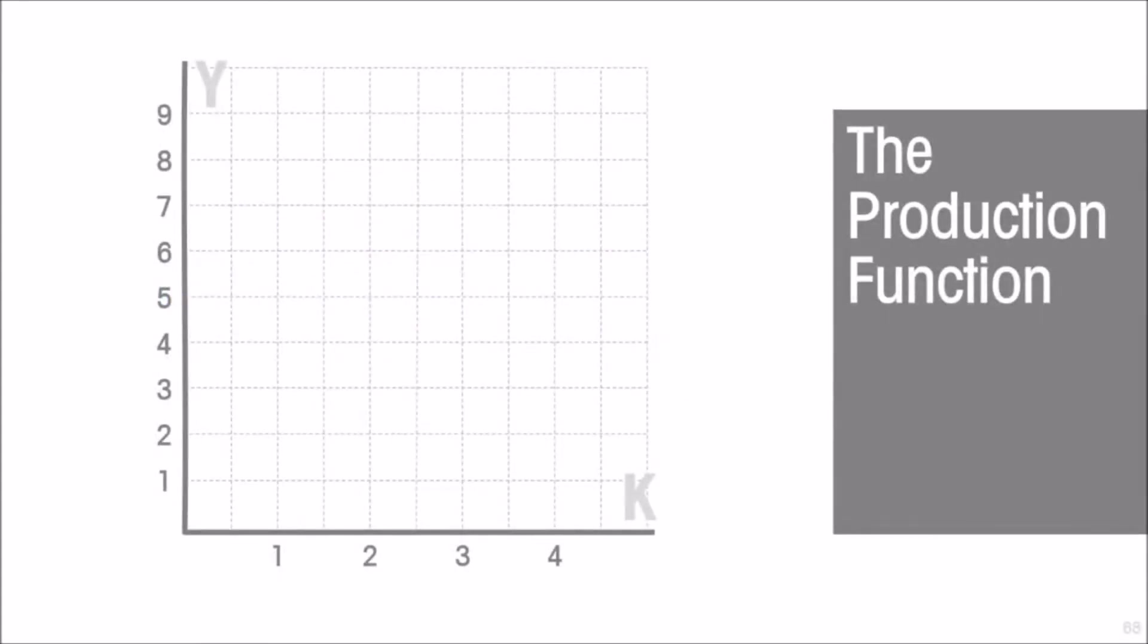Since we are stuck with a two-dimensional graph, then this simplified production function is going to take us given the amount of labor and other factors and simply map changes in the amount of capital to different levels of output. So we're only changing one input here. So we have the amount of capital on the horizontal axis and the amount of output GDP on the vertical axis.